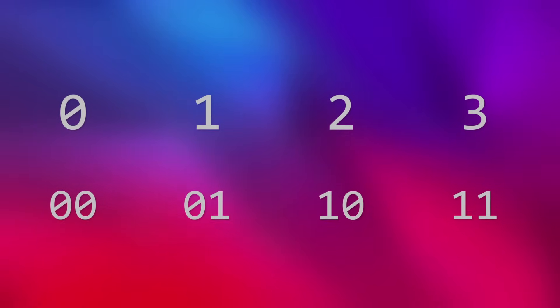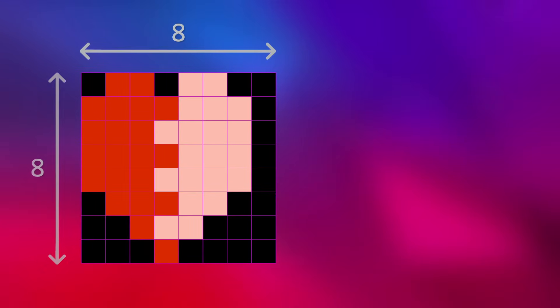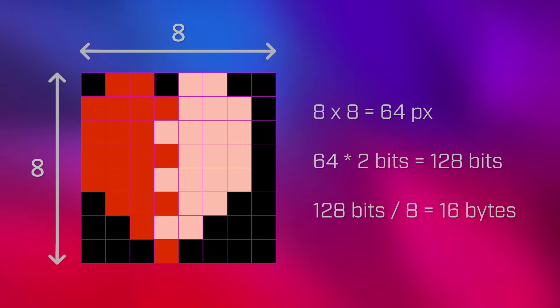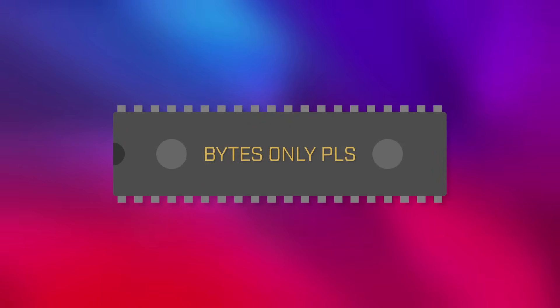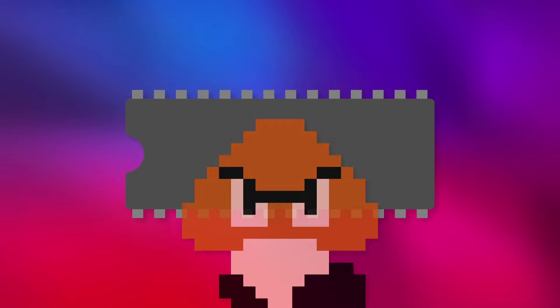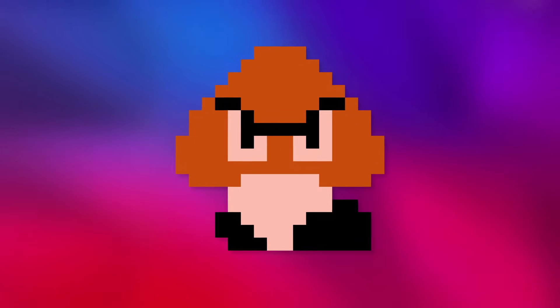Putting this all together, sprites on the NES are formatted as a grid of numbers, with each number having a value from zero to three and representing a palette color index. A value of zero represents a transparent pixel, while values of one, two, or three represent a specific color in one of the PPU's palettes. Since pixels are limited to values of zero to three, they can be stored using only two bits. Let's take a look at a concrete example to see how this works.